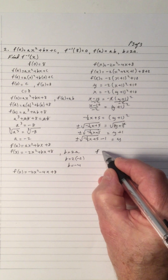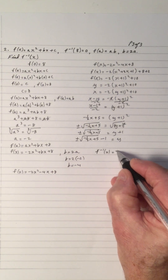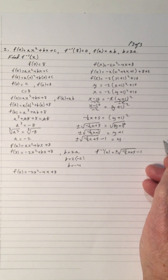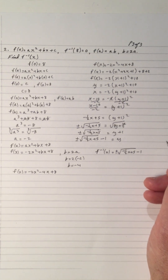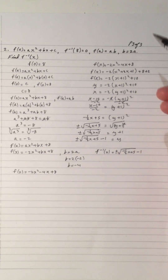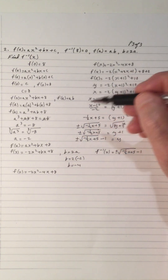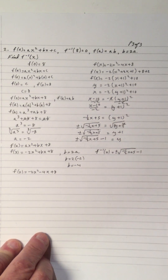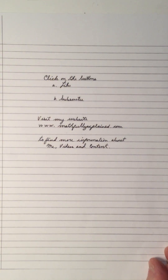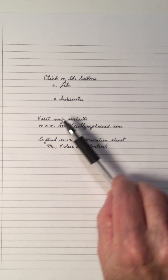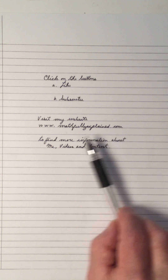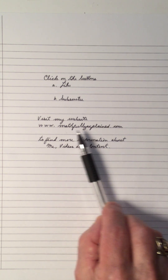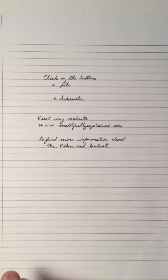And so y equals plus or minus the square root of negative one-half x plus 5 minus 1. So f to the negative 1 of x equals plus or minus the square root of negative one-half x plus 5, minus 1. When I made up this question, I wanted to make up something different to help you think and combine the algebra involved. It's an excellent question for a good review of quadratics, finding the vertex, and doing the inverse. If you like my video, click the like button. Visit my math website, www.mathfullyexplained.com. Thank you for viewing my video. Hope the video helped you.